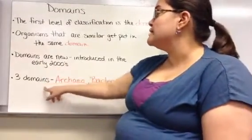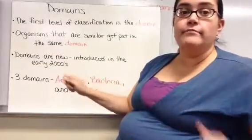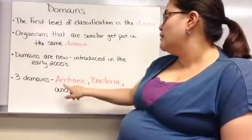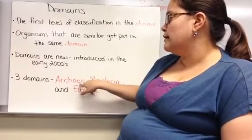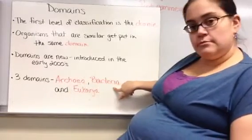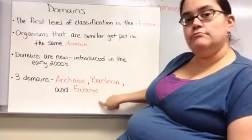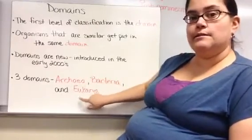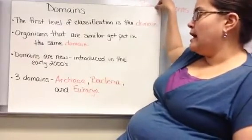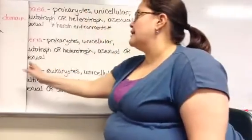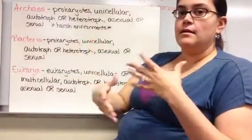There are three domains that organisms can be grouped into: Archaea, Bacteria, and Eukarya. We will talk about the characteristics of each of these domains.